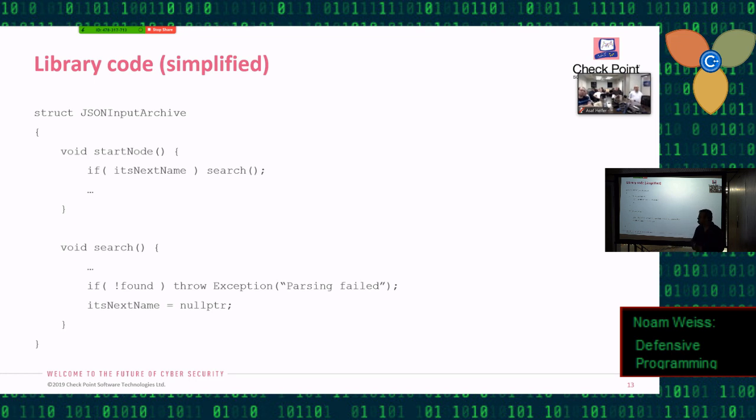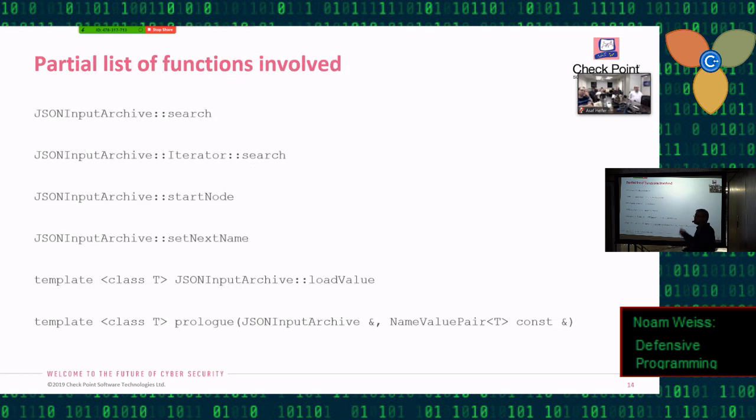So, obviously the fix is very simple. I should switch these two lines and first nullify its next name and only then throw an exception. Alright, so that's a simple bug. Why am I bringing this up to you? Because that's a simplified code. But the list of functions that is actually involved is much larger than this. And in fact the function that throws an exception is the second one here. It's in the iterator and it doesn't even have access to the variable of its next name. So it can't from that point actually change the value. And all the other functions are involved in many flows of the code. So, trying to change the behavior over there will have massive implications over how Cereal works.